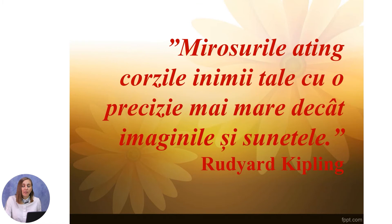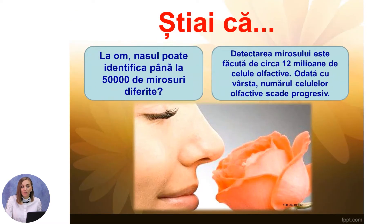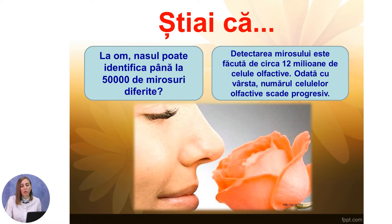Mirosurile ating corzile inimii tale cu o precizie mai mare decât imaginile și sunetele. — Kipling. Știai că, la om, nasul poate identifica până la 50.000 de mirosuri diferite? Detectarea mirosului este făcută de circa 12 milioane de celule olfactive. Odată cu vârsta, numărul celulelor olfactive scade progresiv.